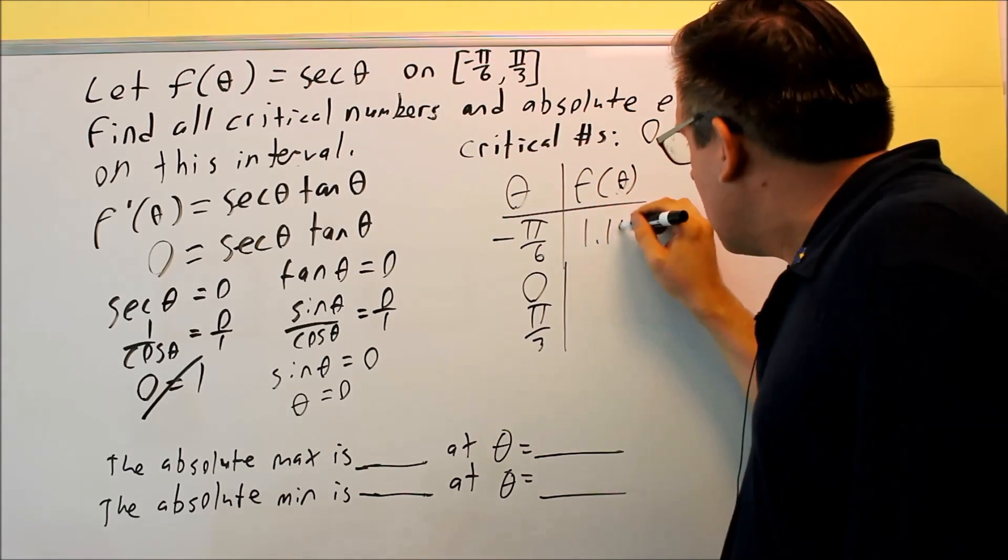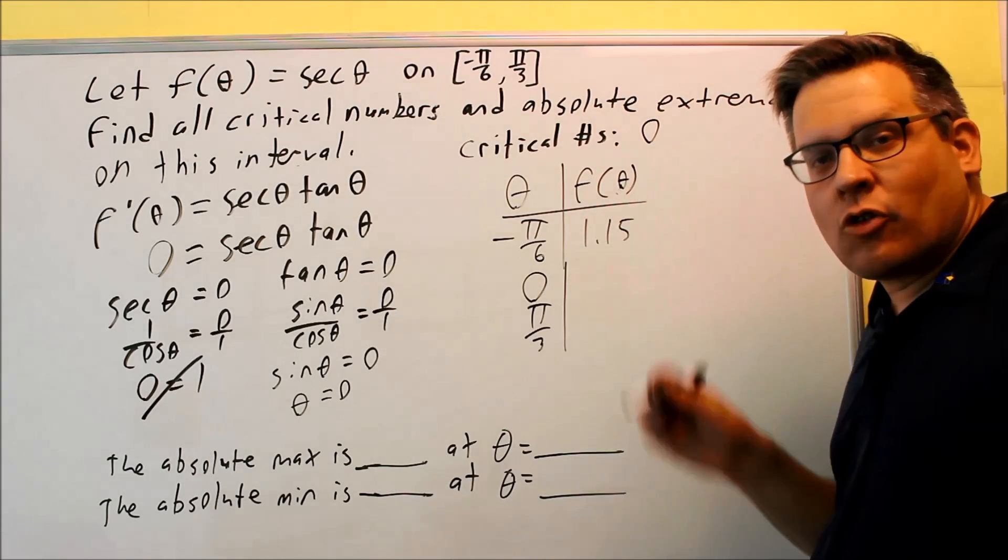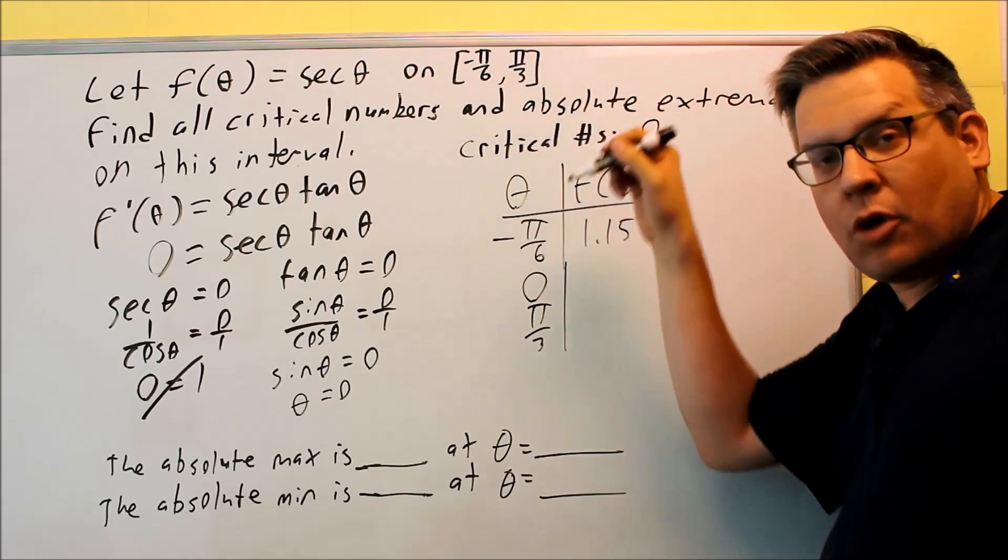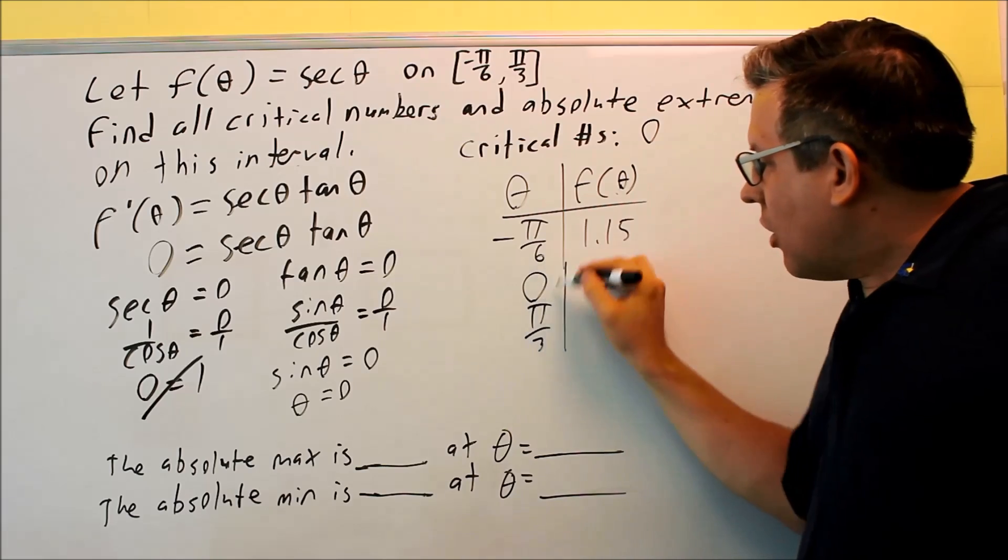So if I put negative pi over six into here and evaluate it as a decimal, I'm going to get 1.15. Okay, so you can double check that. That's what you should get. Remember, make sure your calculator is in radian mode because all these numbers that you have here are in radians.